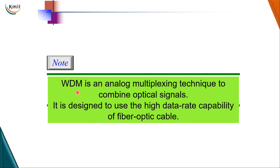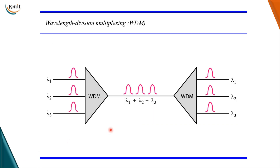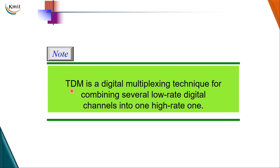The second type is WDM — wavelength division multiplexing. This is also an analog multiplexing technique which combines optical signals. WDM is a technique designed to use the high data rate capability of fiber optic cable, where data are transmitted as optical signals. Very narrow bands of light are combined to make a wider band of light, and at the receiver the signals are separated by the demultiplexer into constituent optical signals.